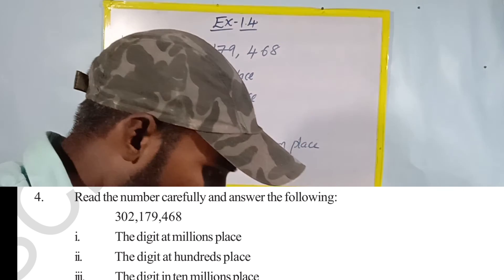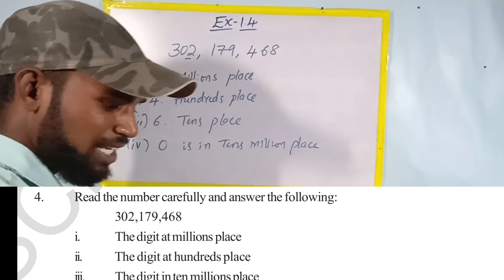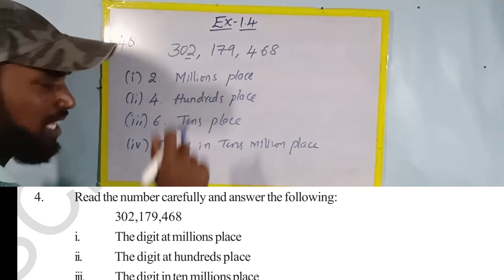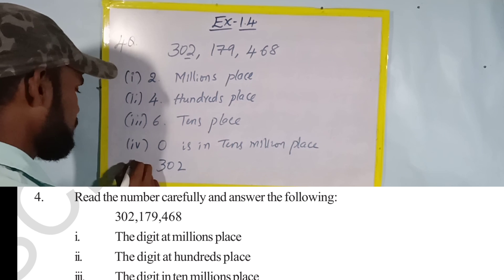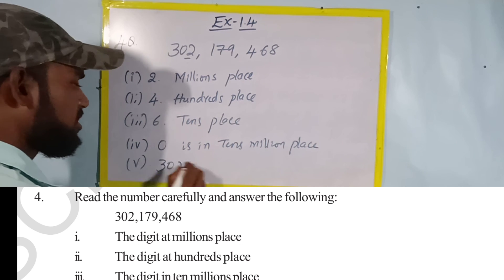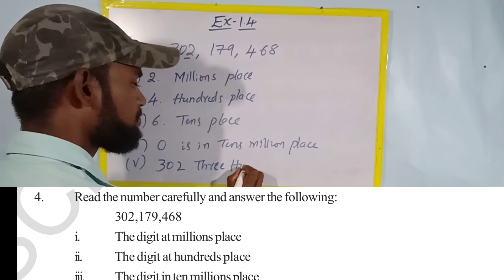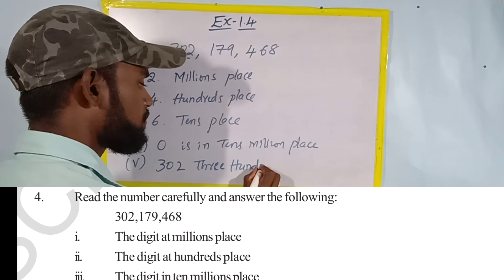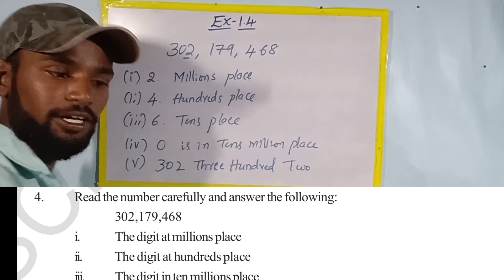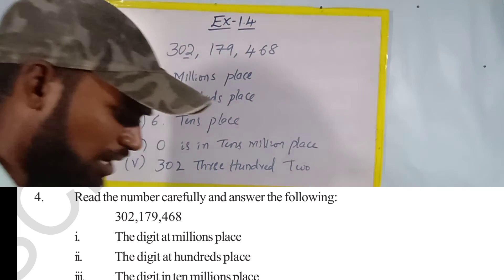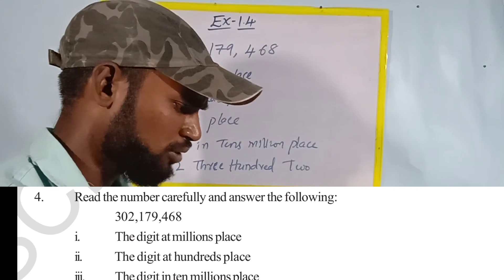What is the digit at the ten millions place? — zero. How many millions are there in the number? — three hundred and two millions are there. So 302 millions. Okay friends, we have completed Exercise 1.4. Tomorrow I am going to explain Exercise 1.5.